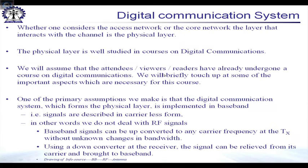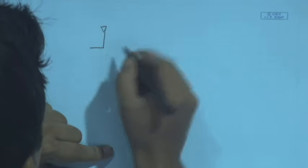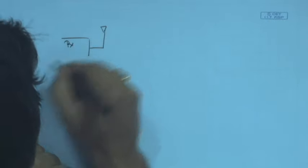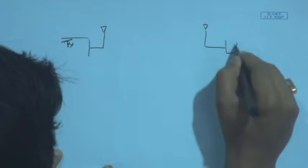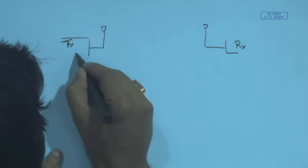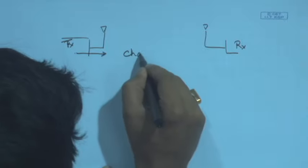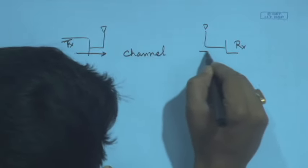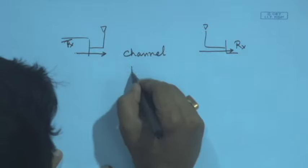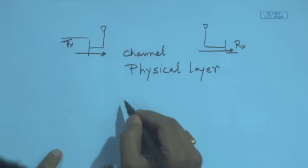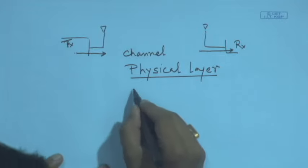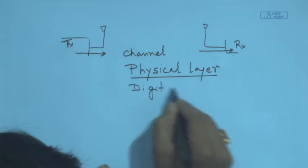Now let us look at the part which connects the transmitter and receiver. The immediate part of the transmitter that talks to the channel, and the immediate part at the receiver that listens to the channel, is the physical layer.